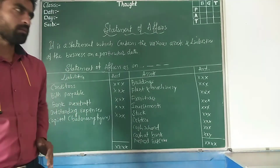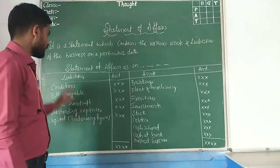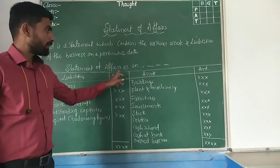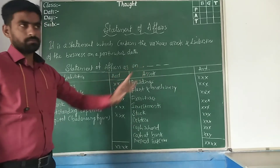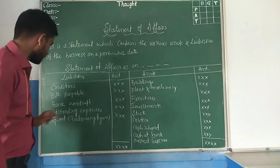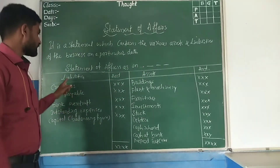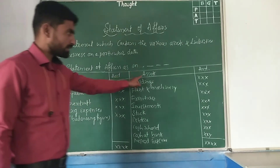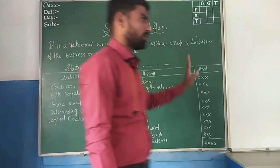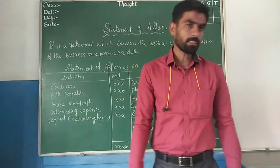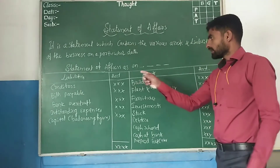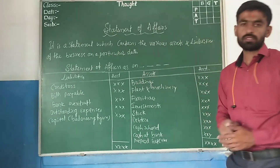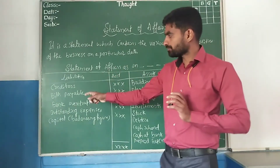The Statement of Affairs is prepared as on a particular date. The format has two sides: the liability side showing liabilities and their amounts, and the asset side showing assets and their amounts.